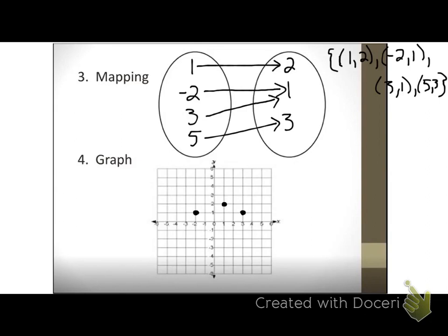And then (5, 3): right 1, 2, 3, 4, 5, then up 1, 2, 3. That's my fourth way to express a relation — by just graphing the ordered pairs on a graph.